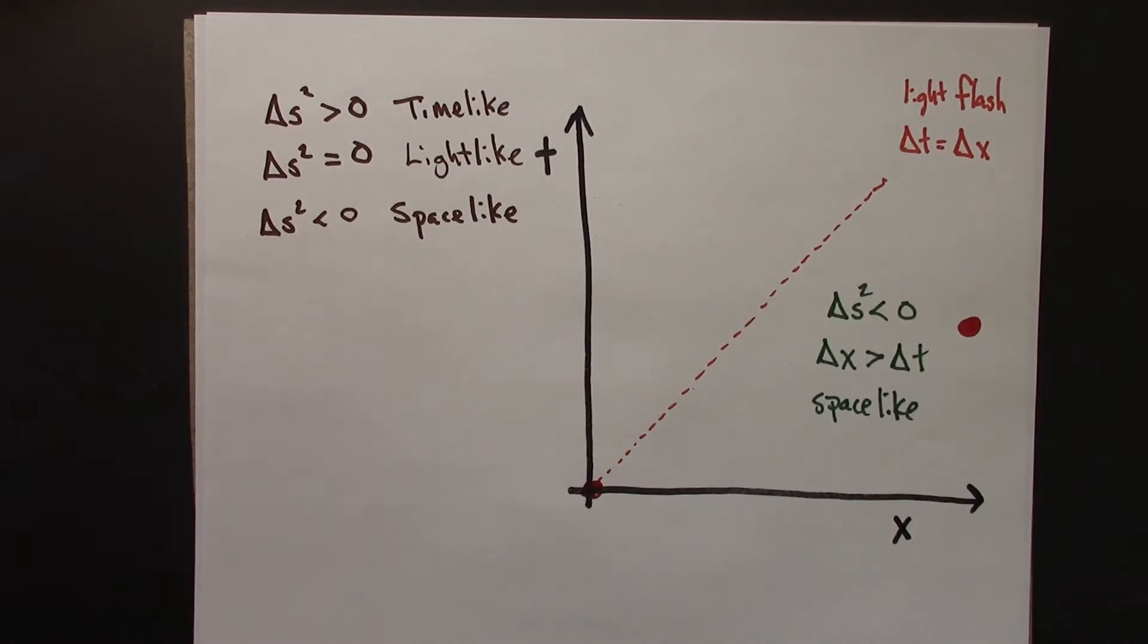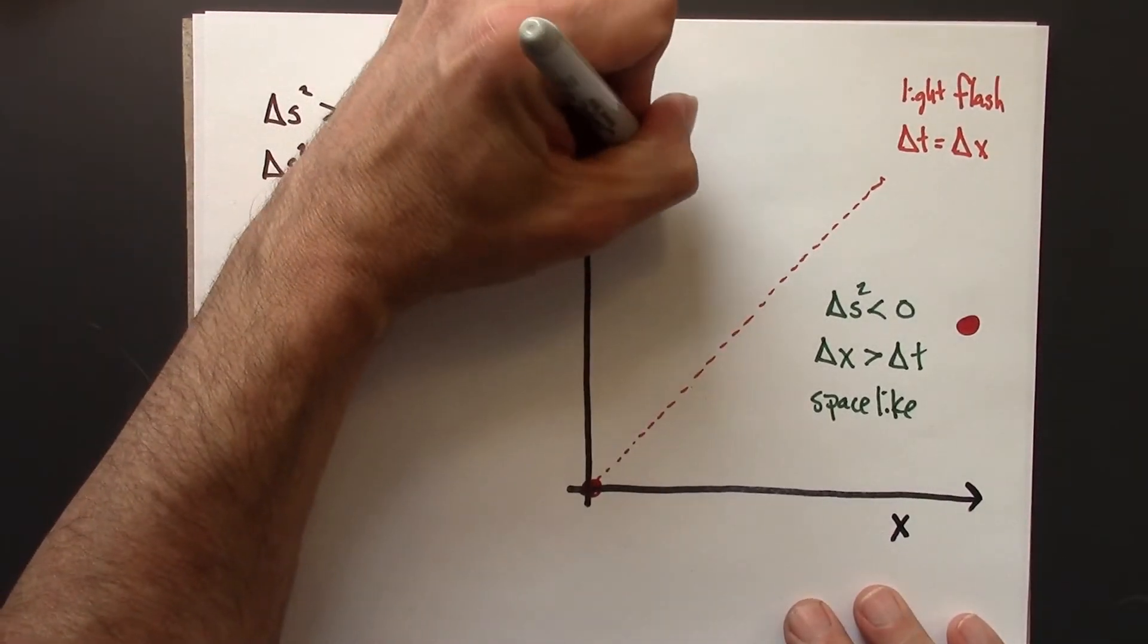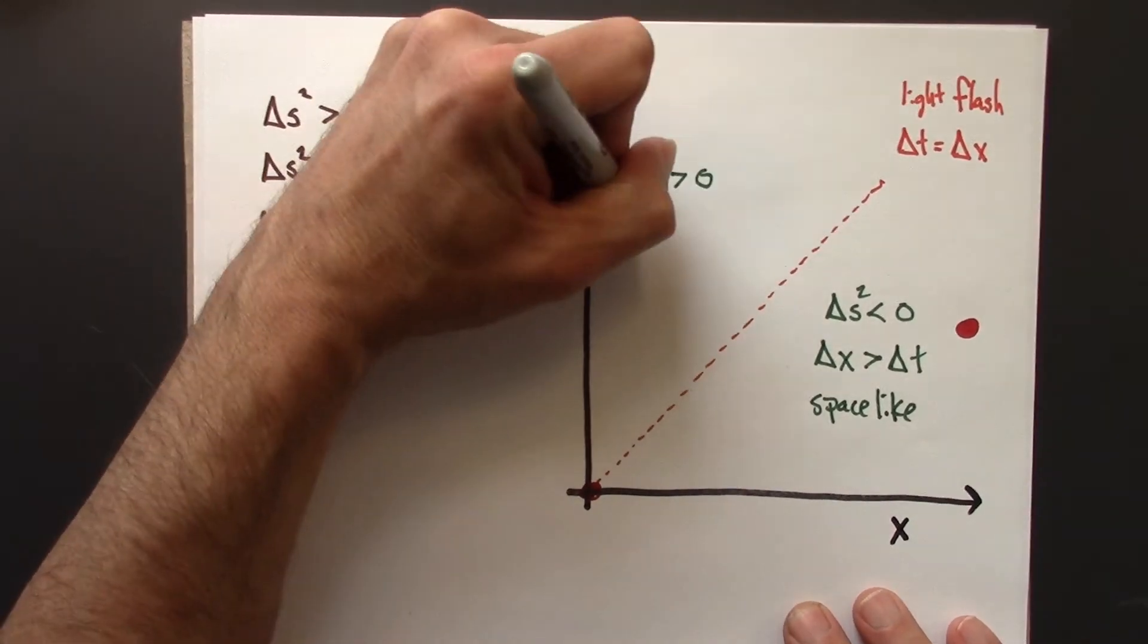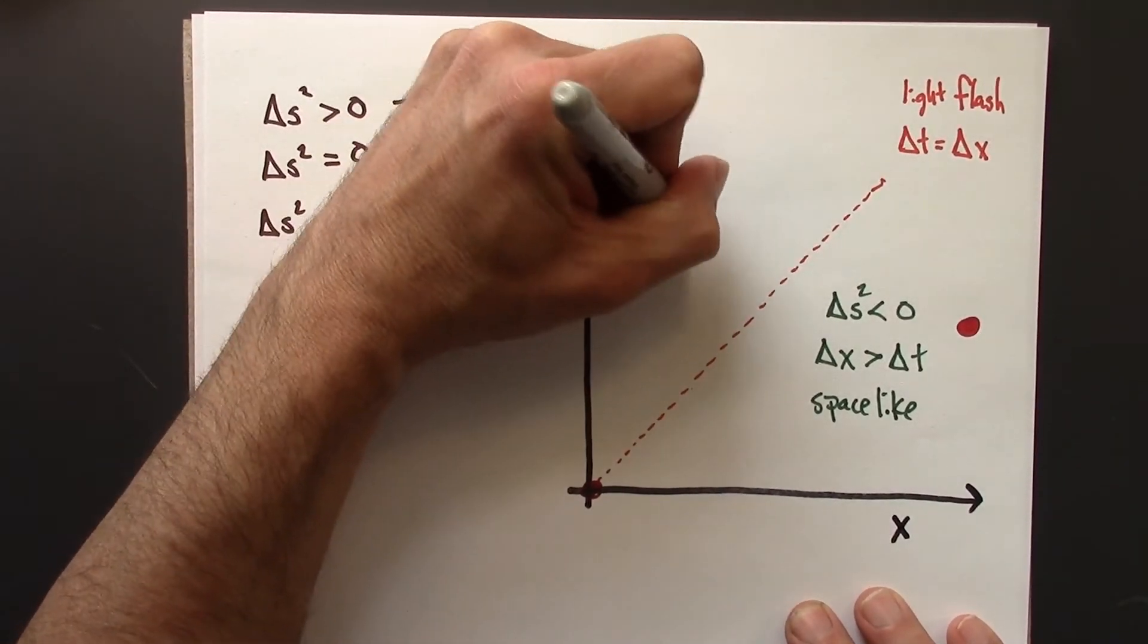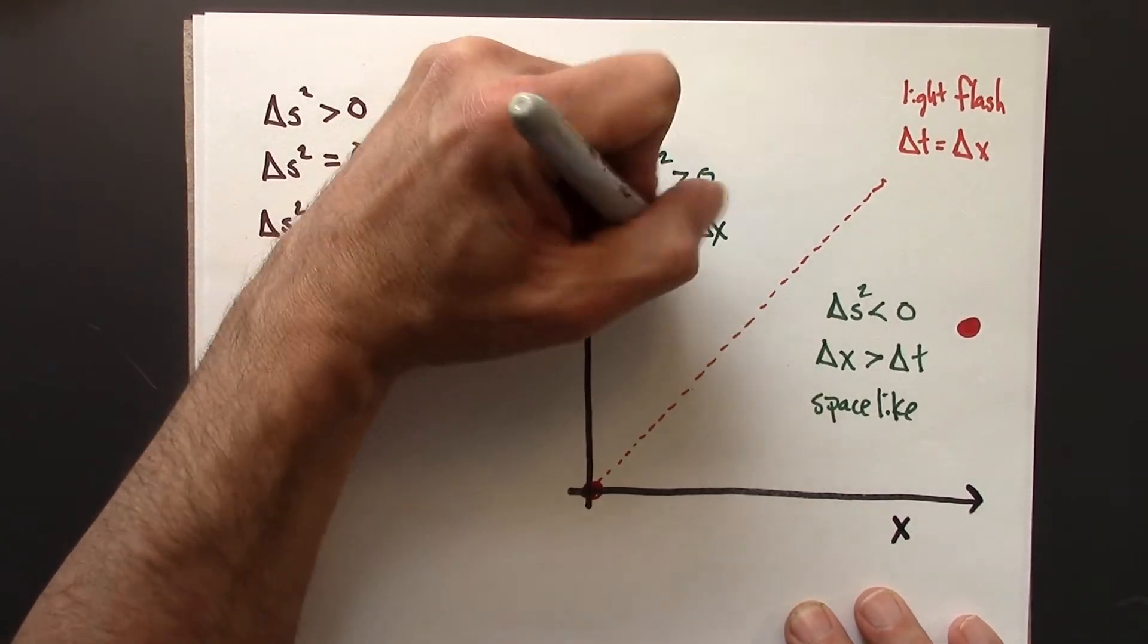Over here, this is delta S squared is positive. This means that delta T is greater than delta X, and this is time-like.